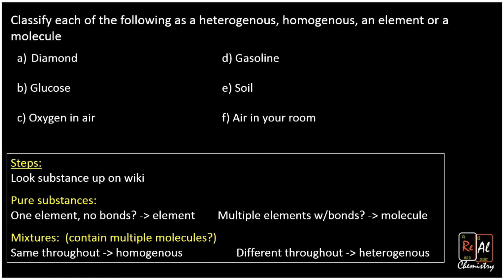So let's look this up one at a time and try to decide. So diamond — we're going to look it up on Wikipedia, and then we're going to ask these questions: Does it have a single element with no bonds? If so, it's an element. Does it have multiple elements with bonds? Then it's a molecule. If it's a mixture of multiple molecules and it looks the same throughout, we call that homogenous. If it looks different throughout, we call that heterogeneous.